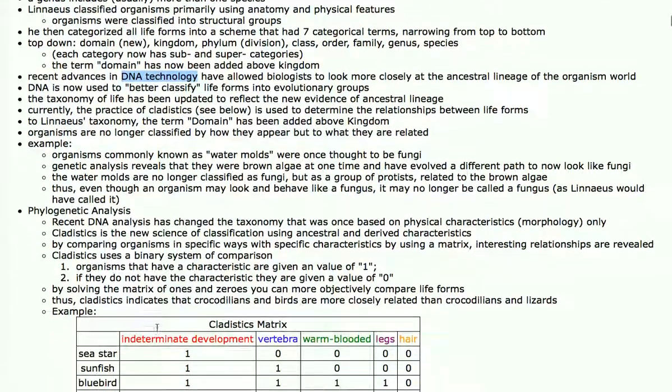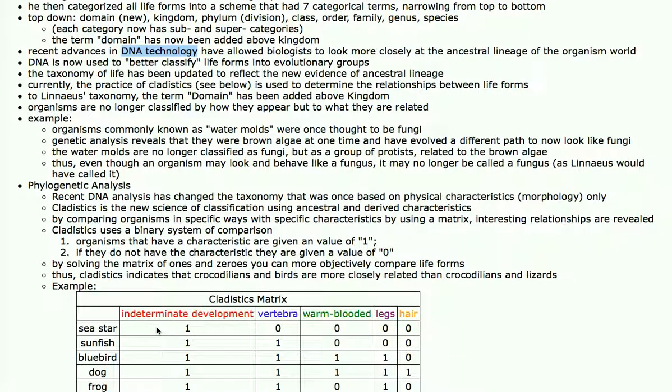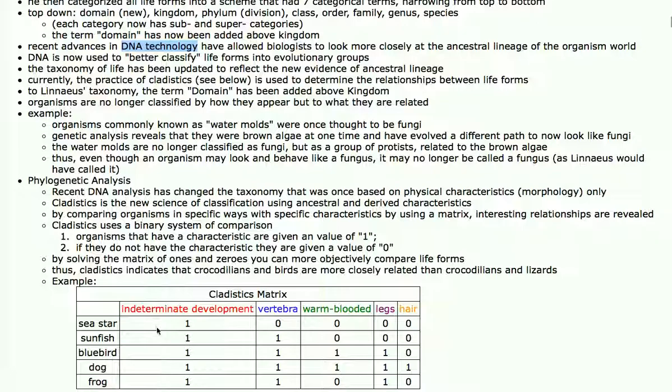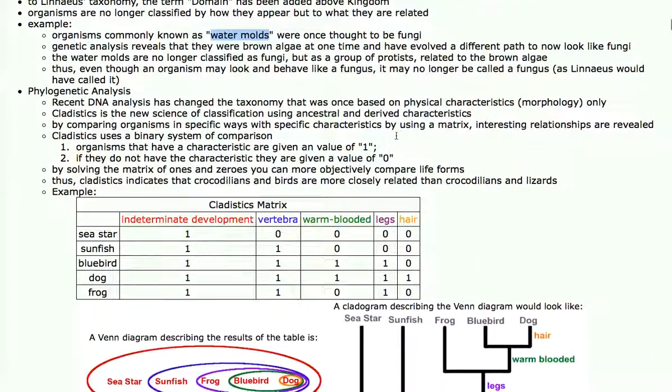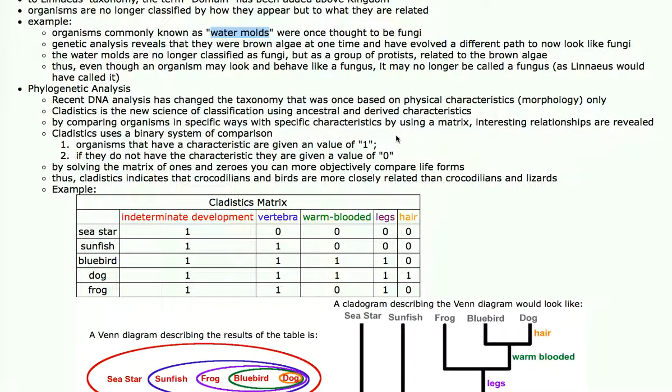DNA classification has changed how we look at the organisms on Earth. For example, there's an organism commonly known as a water mold that grows underwater on dead and decaying materials. They look like molds, they behave like molds, they grow like molds, but when a DNA analysis was performed, it was found that their closest living relatives were algae. So the water molds are no longer considered a fungus but instead are considered algae. There are many other examples of where DNA evidence has upturned or overturned what we once thought was a relationship.